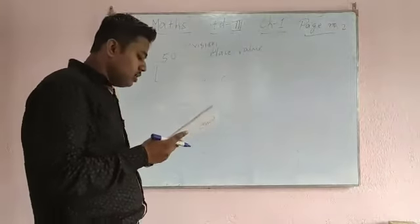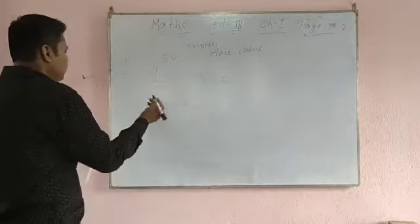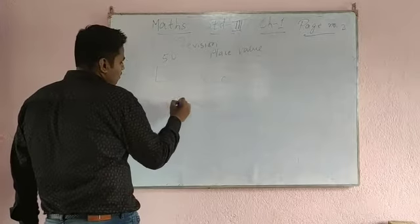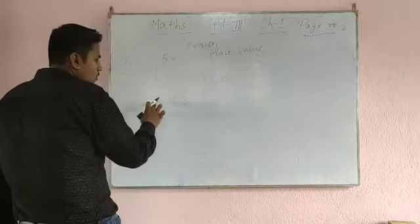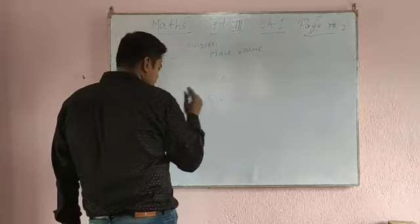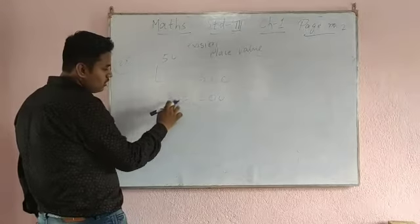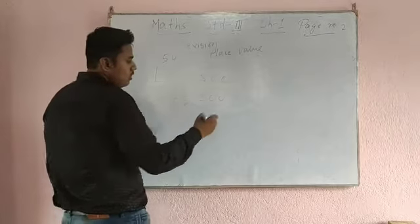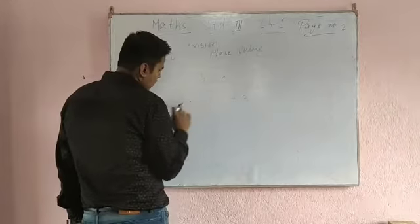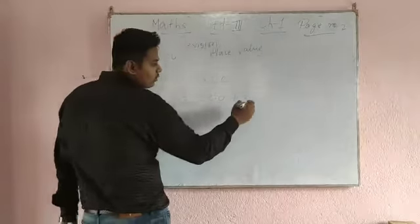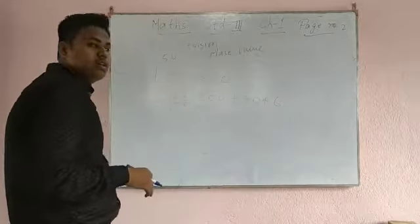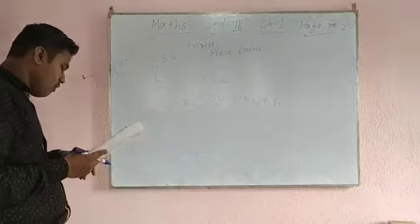Question number 23 is expanded form. For example, take 236. Break it: the 2 has two digits after it, so write 200. Plus, the 3 has one digit after it, so write 30. Plus the last digit is 6, so write 6. So the expanded form is 200 + 30 + 6.